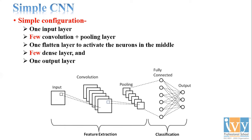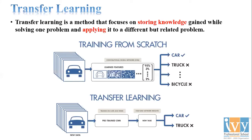After the flattening layer, there are a few dense layers — the hidden layers — and then one output layer. Notice that instead of a specific number, we say 'a few' convolutional or dense layers. Why 'a few' rather than a defined number is something we'll explore in the upcoming slides.